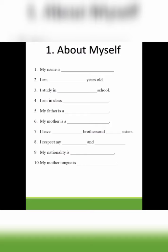I have dash brothers and dash sisters. If you don't have any brother or sister, then write no brothers and no sisters. Number eight: I respect my dash — whom do you respect? Your parents and teachers. Yes, write parents and teachers. Number nine: My nationality is dash — you are Indian, so write Indian. Number ten: My mother tongue is dash — write Hindi, Punjabi, Gujarati, whatever your mother tongue is.